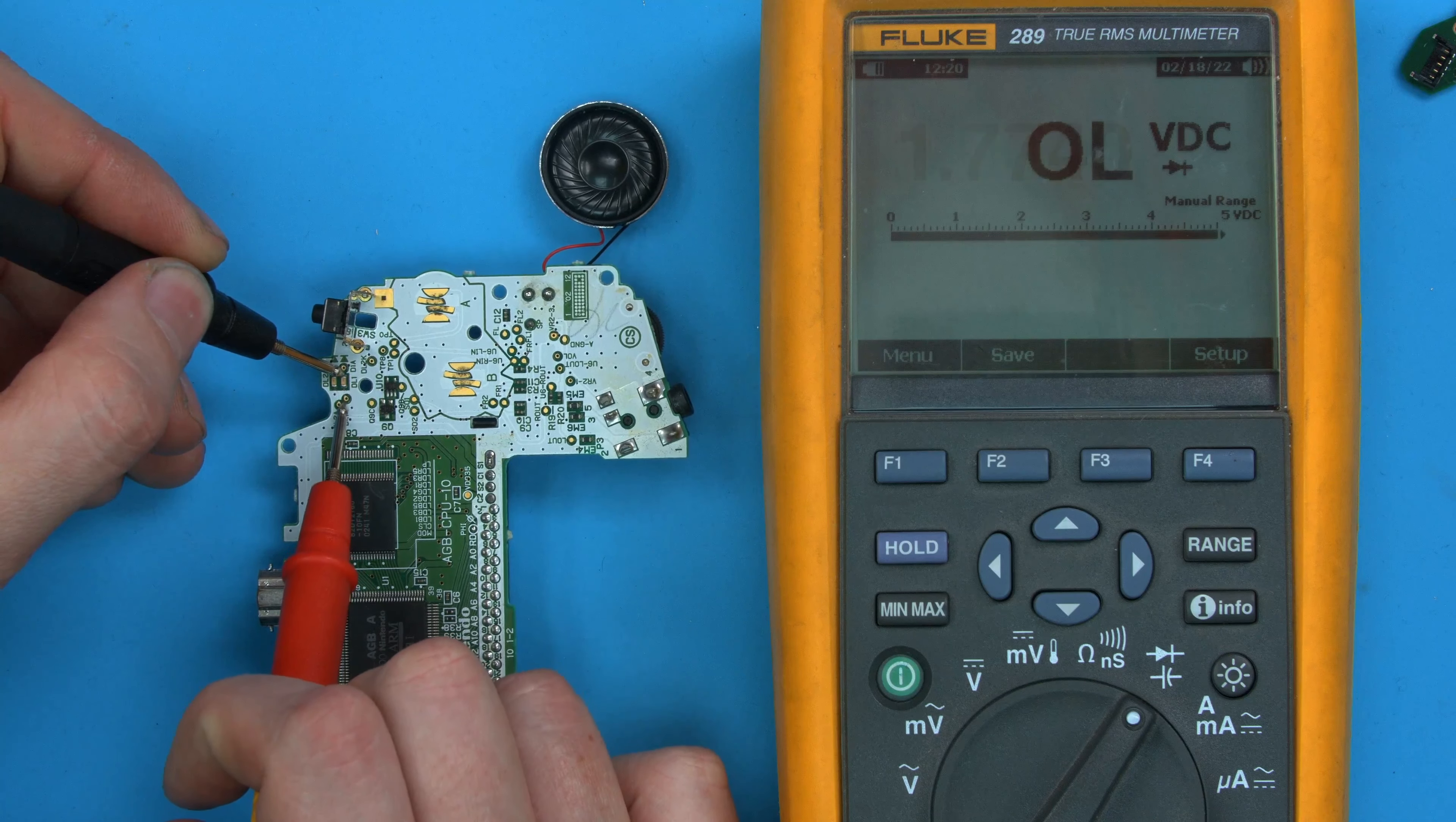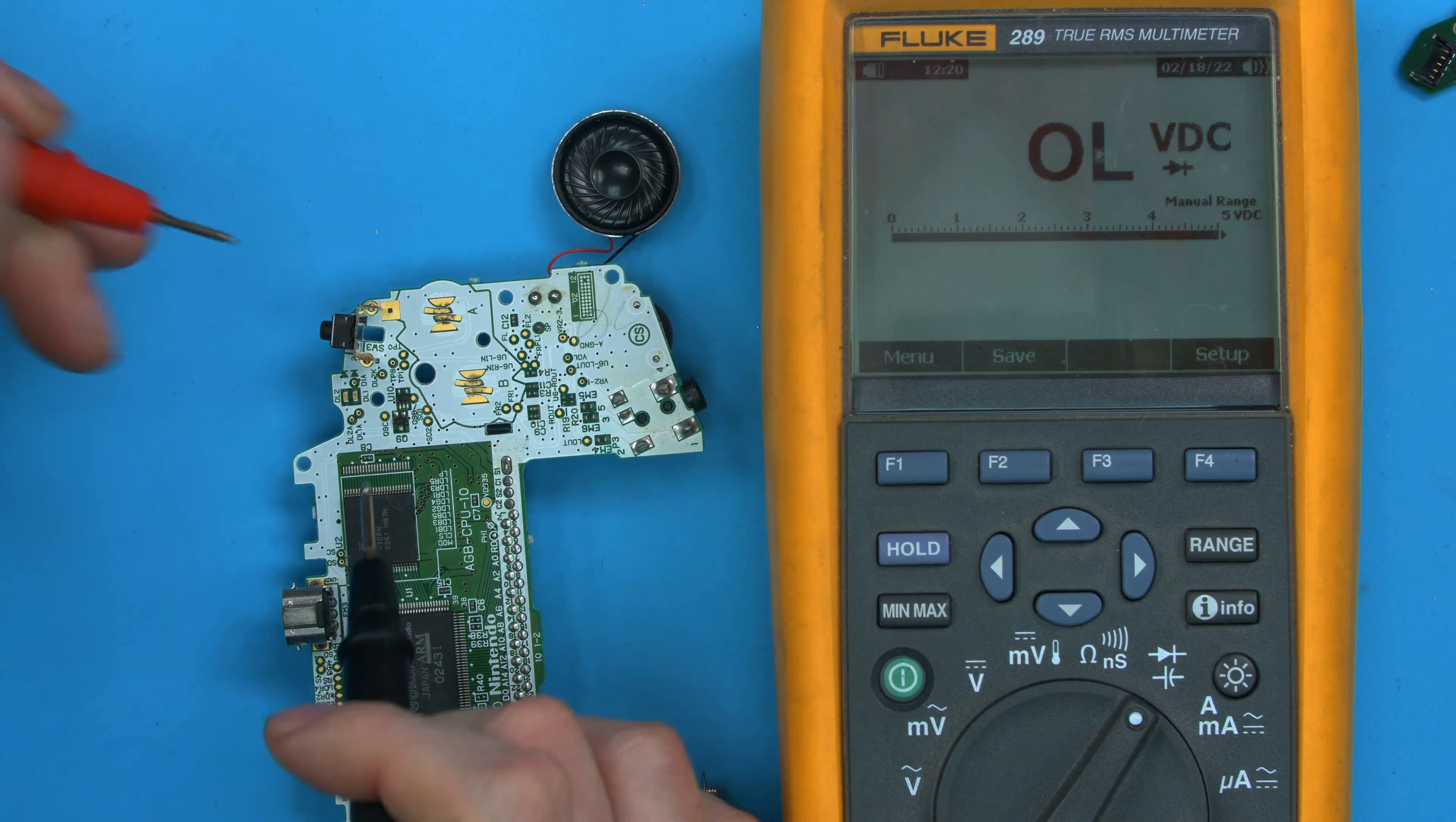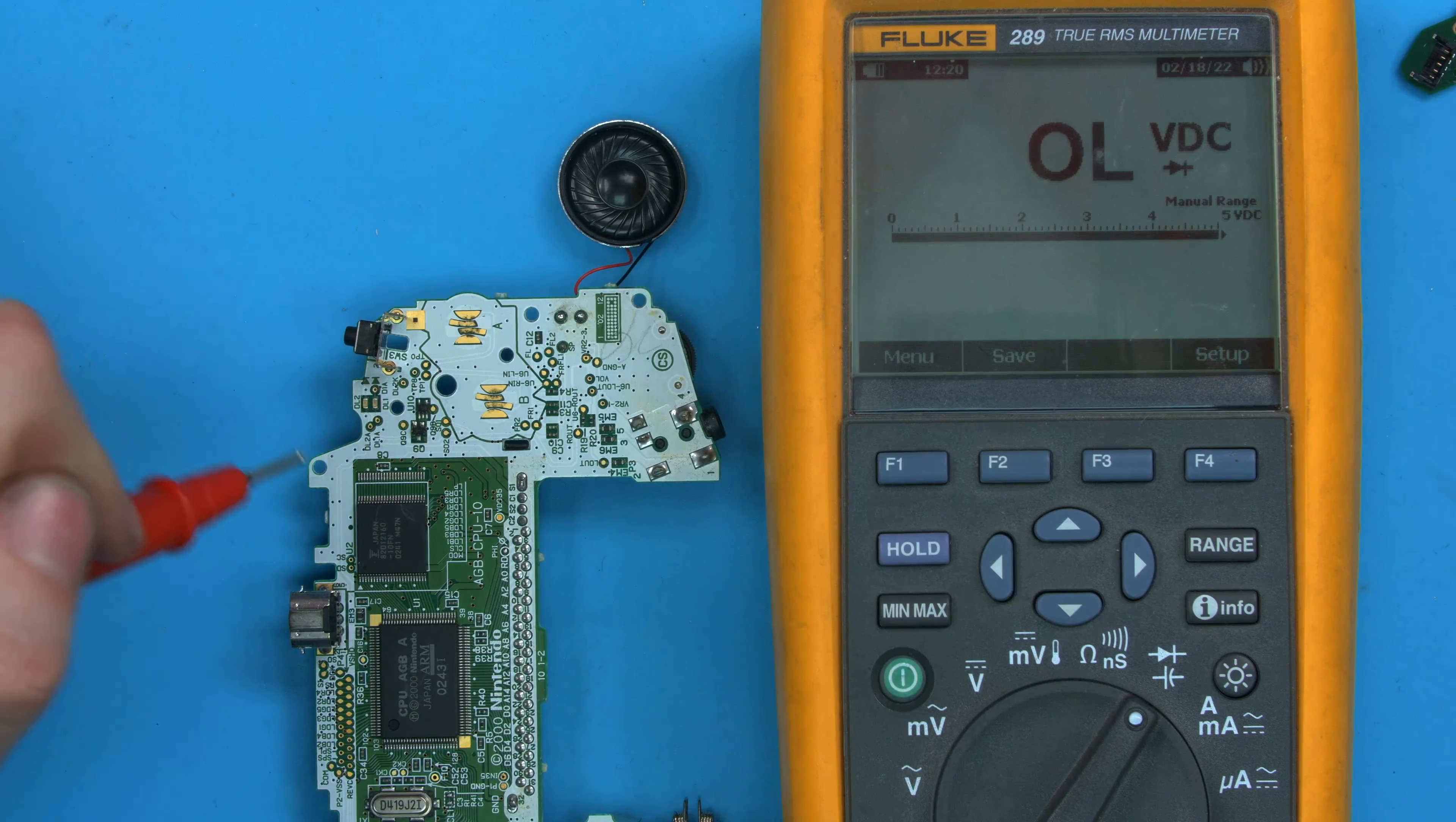And if we flip the probes around, you should see the other way is open line, which means there's no connection. It's the same as not having a connection. That's a good diode.